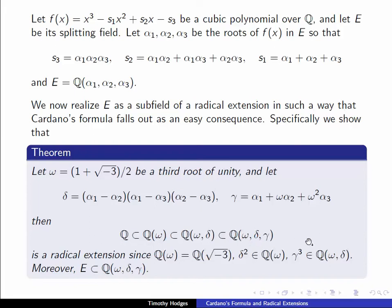This is a radical extension because δ² is actually in ℚ, γ³ will show lies in ℚ(ω,δ), and E is contained in ℚ(ω,δ,γ). So this is the radical extension that E is contained in that's guaranteed by our Galois theory that we've seen earlier.